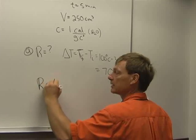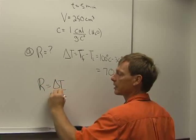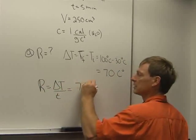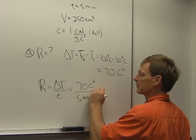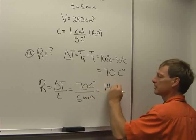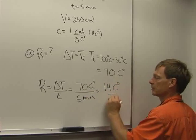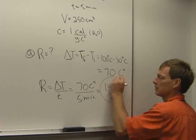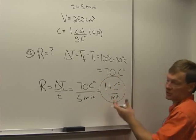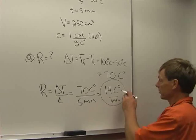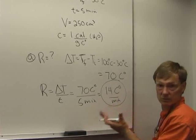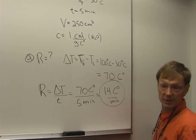And the cooling rate is the temperature difference over the time, which is 70 Celsius degrees divided by 5 minutes, which is 14 Celsius degrees per minute. I could change it into the number of Celsius degrees per second if I want, one minute per 60 seconds, but I didn't ask for a specific unit, so we'll stay with that.